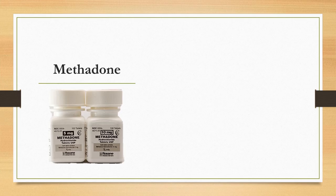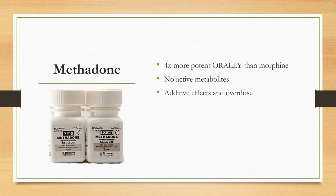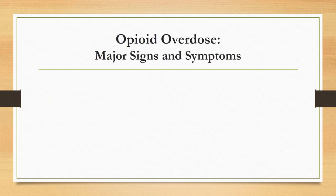As opioid addiction grows, more patients will be seen on methadone, which is an opioid agonist that when administered orally is four times more potent than morphine without any active metabolites. Patients on methadone preoperatively will continue this medication, and additional opioids can have additive effects. This should be considered when determining which medication to administer, the dosing, and when evaluating signs of overdose.